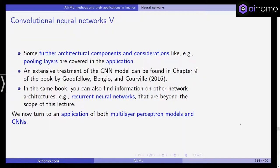Some further architectural components and considerations like pooling layers will be covered later in the application. An extensive treatment can be found in the Goodfellow, Bengio, and Courville textbook. You can also find information on other network architectures, though these are beyond the scope of this lecture. We will see both the multilayer perceptron and the convolutional neural network in the application. You now have a basic understanding of what CNNs and multilayer perceptrons are. It's very simple to use these models in R, and we'll see this in the application.